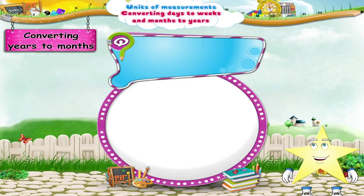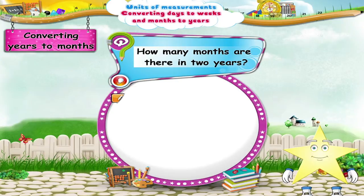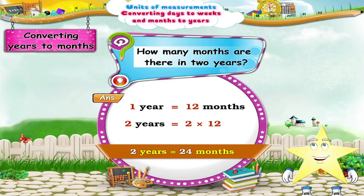Now let us move to months and years. Do you know how many months are there in 2 years? One year equals 12 months. So 2 years means 2 multiplied by 12, which is 24 months. Excellent, Stari!